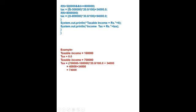Next condition: if taxable income > 5,00,000 and <= 8,00,000, then tax = (ti - 5,00,000) * 20 / 100 + 34,000 — because we add 34,000 for the 5,00,000 slab. If taxable income > 8,00,000, then tax = (ti - 8,00,000) * 30 / 100 + 94,000 — because 94,000 is the accumulated tax for 8,00,000, and we add 30% of the amount exceeding 8,00,000.